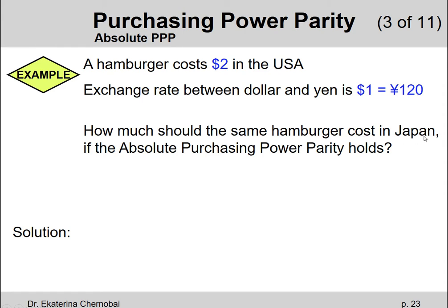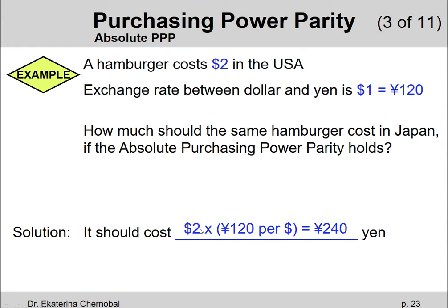How much should the same hamburger cost in Japan if absolute purchasing power parity holds? In other words, if this hamburger costs the same amount of money in both countries — the solution is: if $1 gives us 120 yen, then $2 (the cost of the burger) gives us $2 × 120 yen per dollar = 240 Japanese yen. So 240 yen is how much the same burger should cost in Japan.